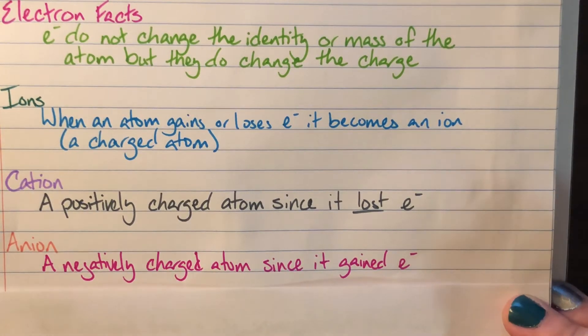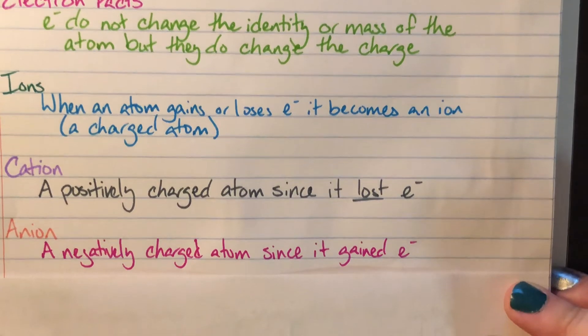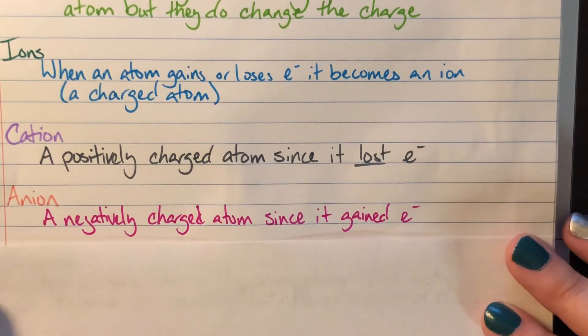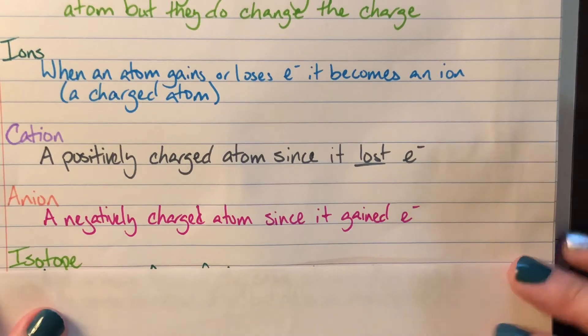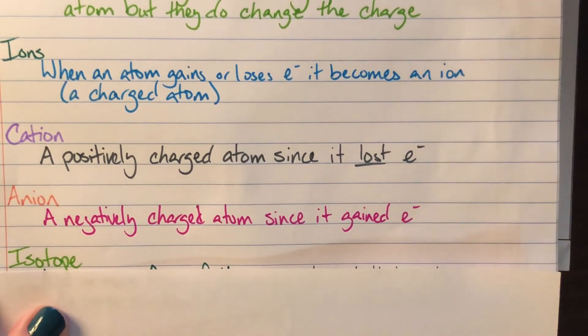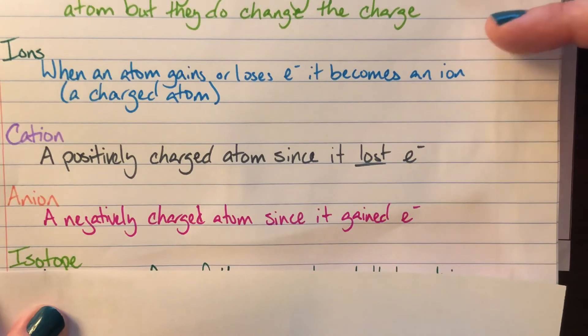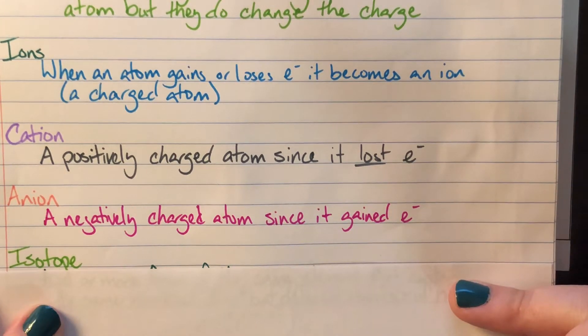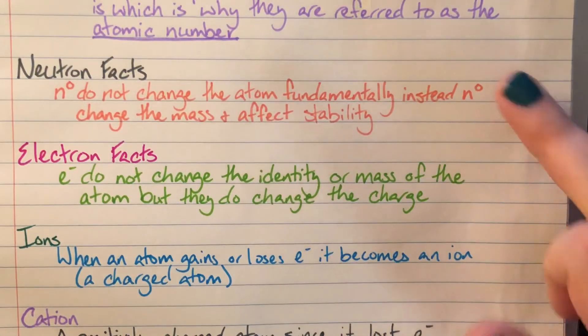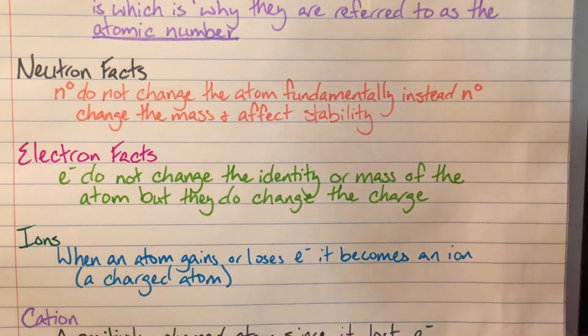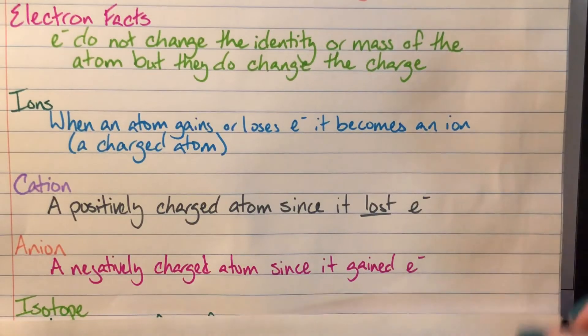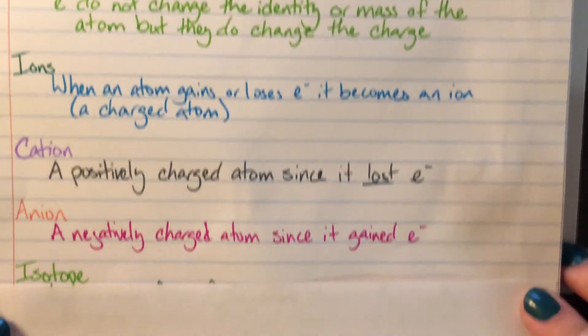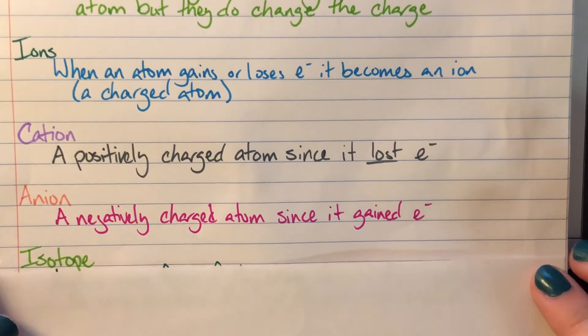The very last thing that we need to go ahead and talk about today are going to be something called an isotope. So all of these types of ions were a direct result of my number of electrons. My isotopes are a direct result from my number of neutrons. So we're backtracking here. All the ions were a direct result of electrons. Isotopes are a direct result of my neutrons.